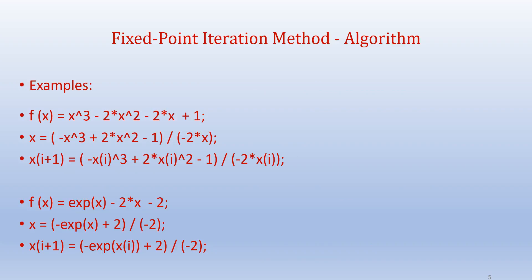To illustrate through some examples, the first one being an algebraic equation: f(x) = x³ - 2x² - 2x + 1, and we rearrange this in the form of equation 2, that is x = (-x³ + 2x² - 1)/(-2x). In an iterative form it is presented in the third line. Similar arrangement is presented for the transcendental equation as well.